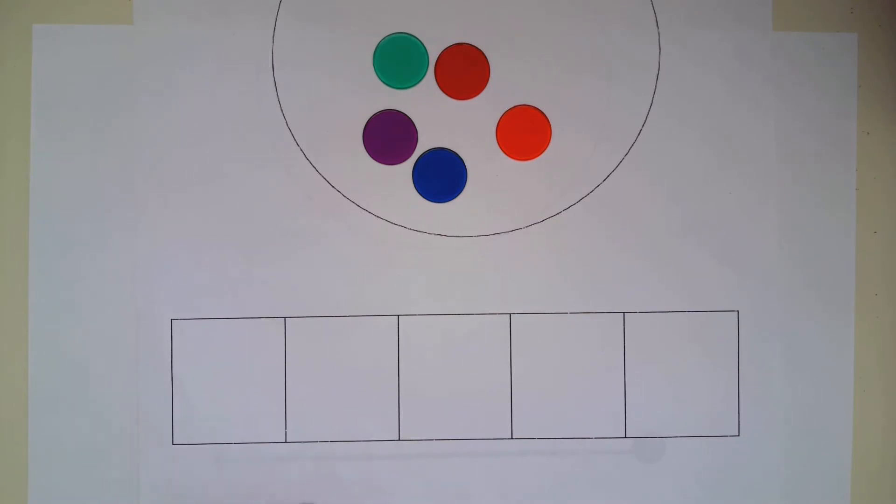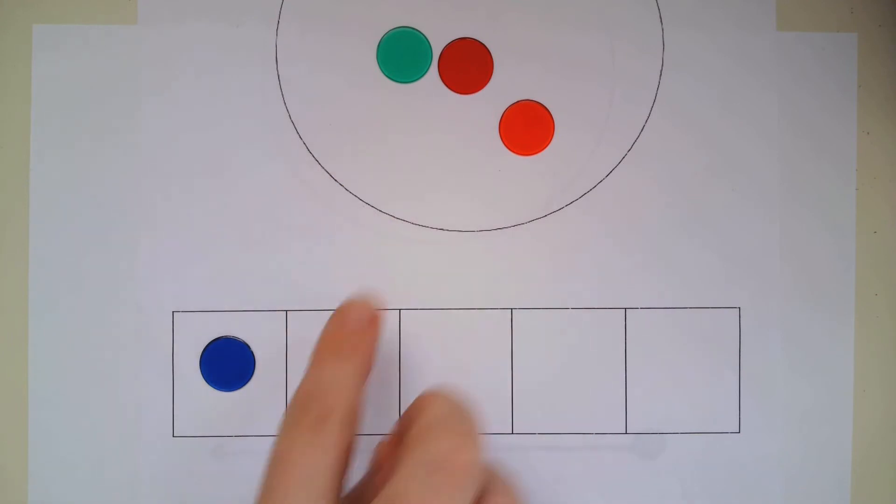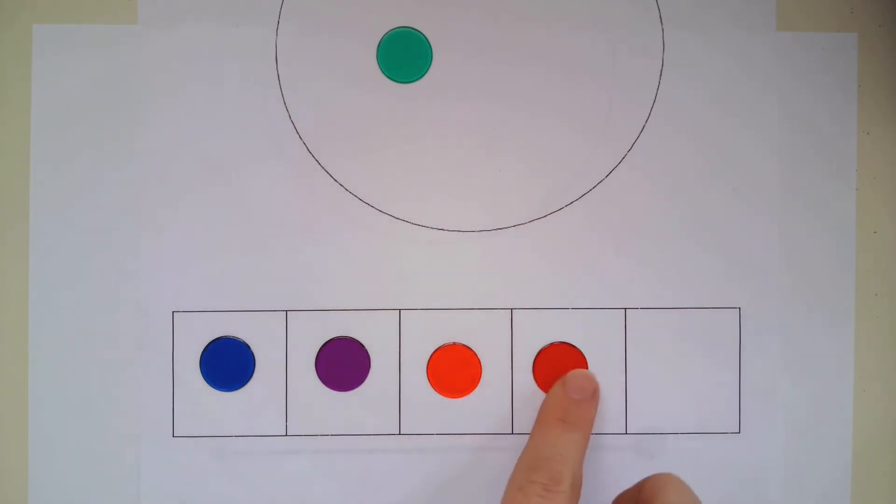We're going to begin by just segmenting. For instance, if I have a word like 'clock', we just want to segment: c-l-o-ck, clock. So we start with segmenting.